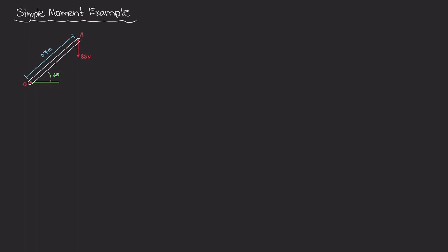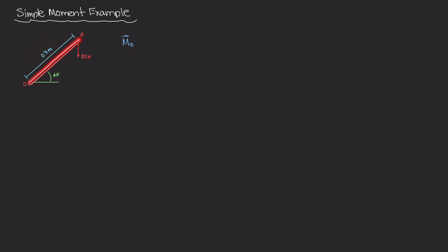Welcome back. In this video, we're going to do a simple example of calculating a moment, but things might look a little bit different. Here in this diagram, I have a rigid body — some metal bar or metal arm. At the very end of this arm, there's a force of 85 newtons being applied at point A, acting straight downwards. Our question is: what is the moment about point O? Point O is here, and the arm is acting at an angle of 65 degrees above the horizontal. The length of this arm is 0.7 meters.